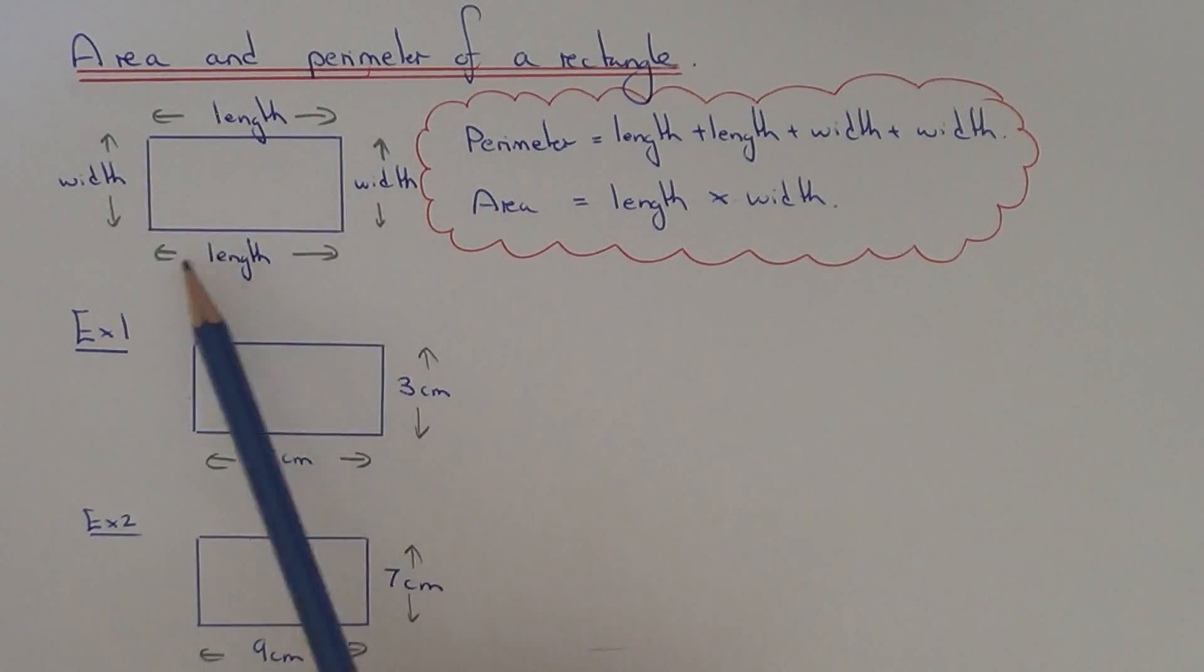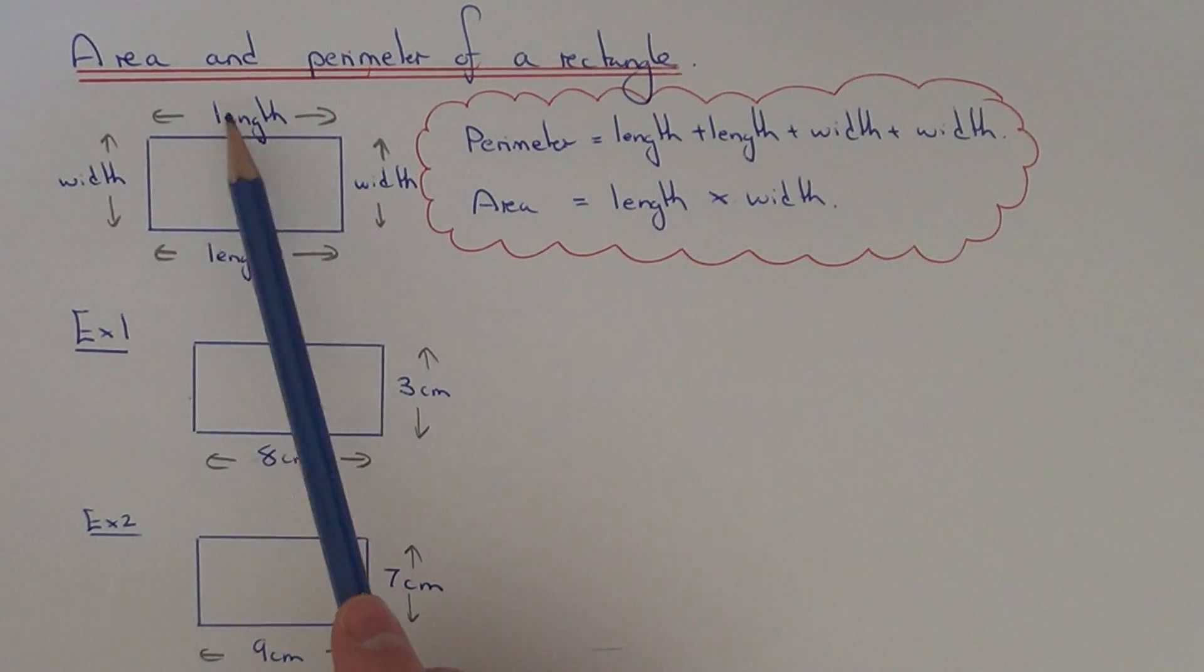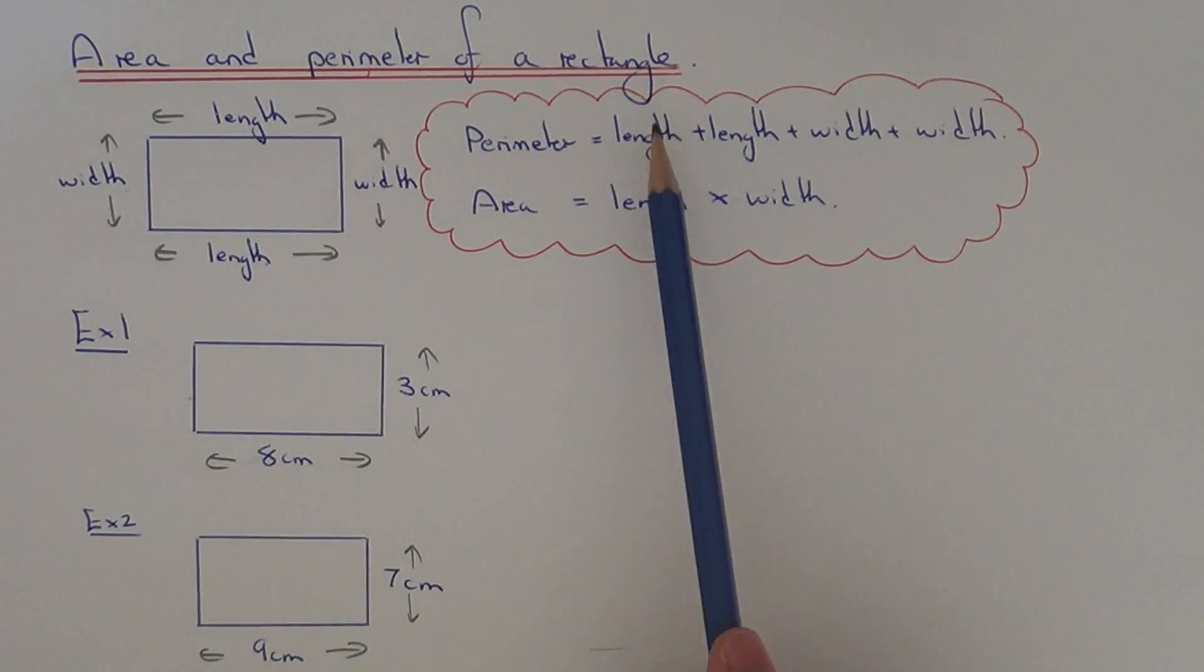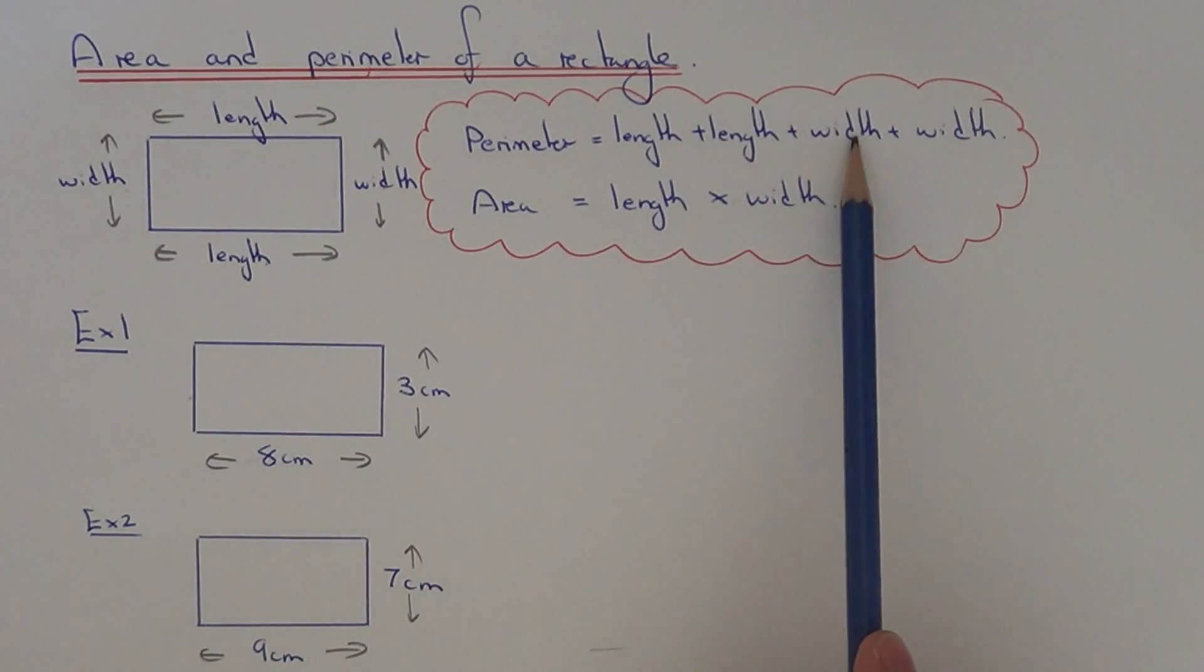So a rectangle has four sides, so we need to add up the length and the length and the width and the width. So it's length plus length plus width plus width.